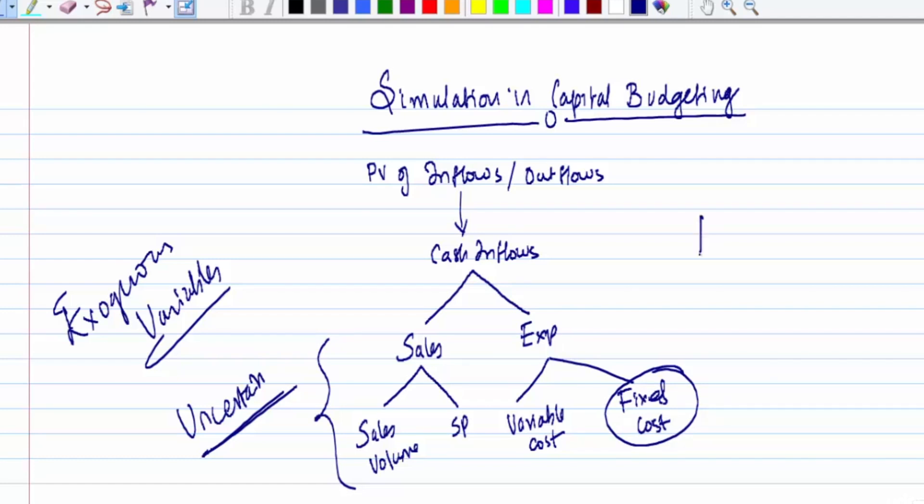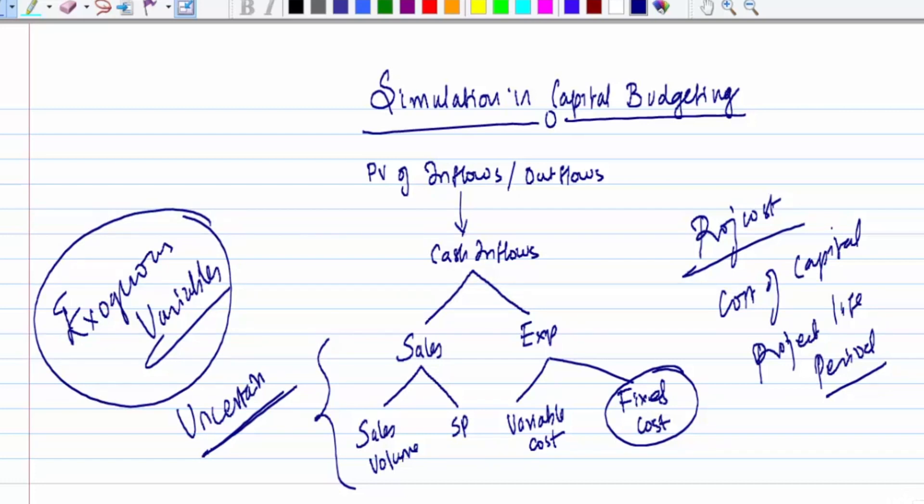It can be the project cost itself, or the cost of capital, or the project life period. While estimating project cash flows, some items are variable and some are fixed. The items which are fixed are called parameters.